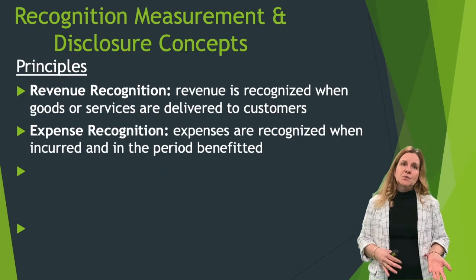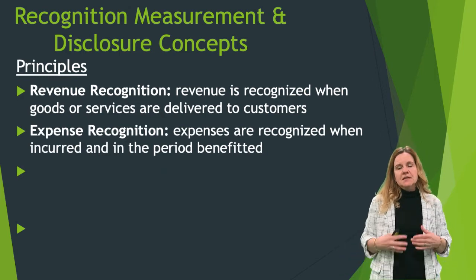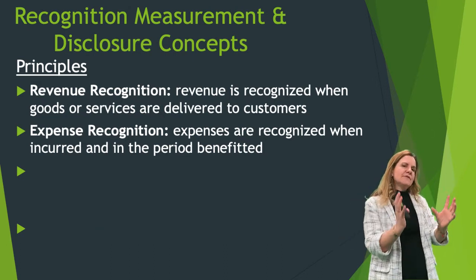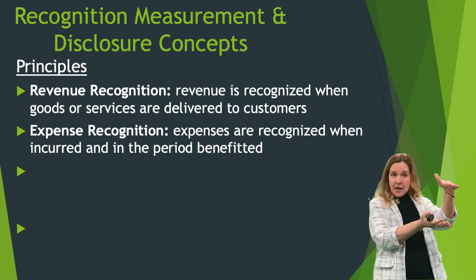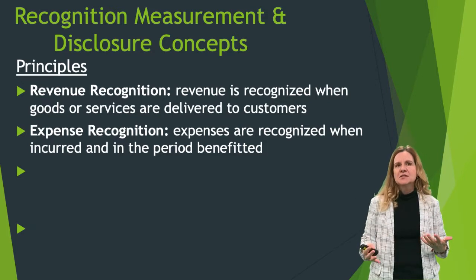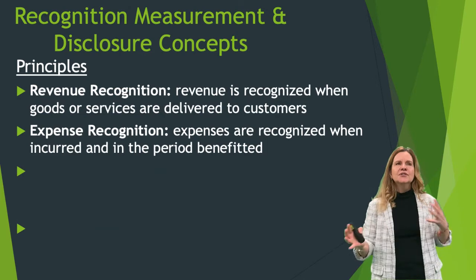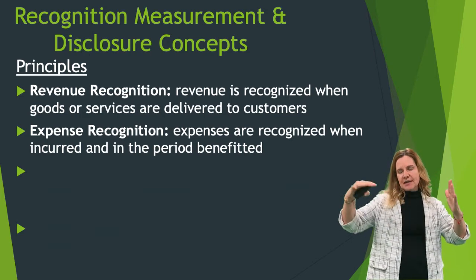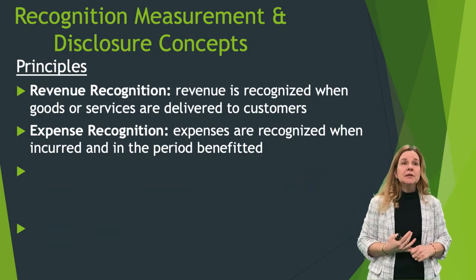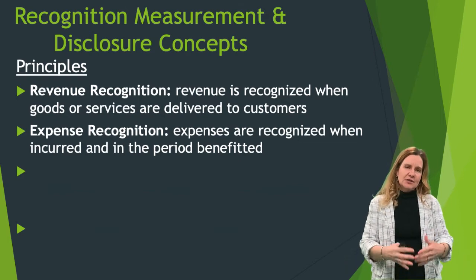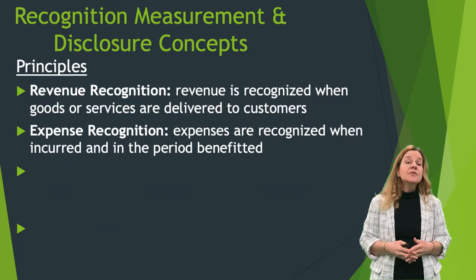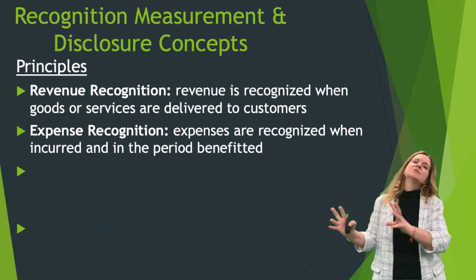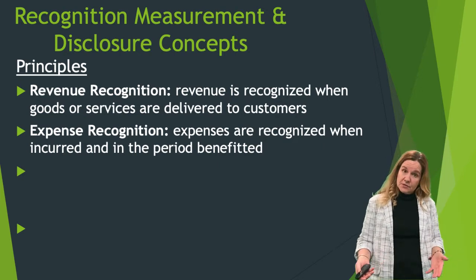Expense recognition: expenses are recognized when incurred and in the period benefited. With the matching principle, we try to get the expense into the same time period as the revenue it helped generate — the same month or year. Some expenses are allocated over periods of time, like advertising, where it's hard to determine exactly what revenue it's associated with. Others, like utilities, are expensed when incurred — put into the month the utilities were used. Another approach is a systematic method, such as depreciation, where plant assets are depreciated as they're used up.